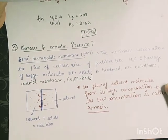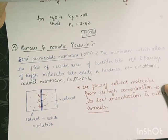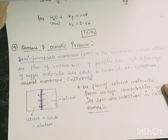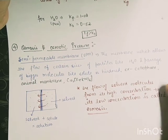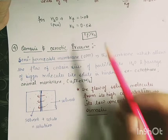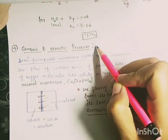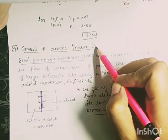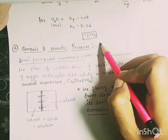We have now discussed all the colligative properties such as depression in freezing point, elevation in boiling point, and relative lowering in vapor pressure. Our last colligative property is osmosis and osmotic pressure.